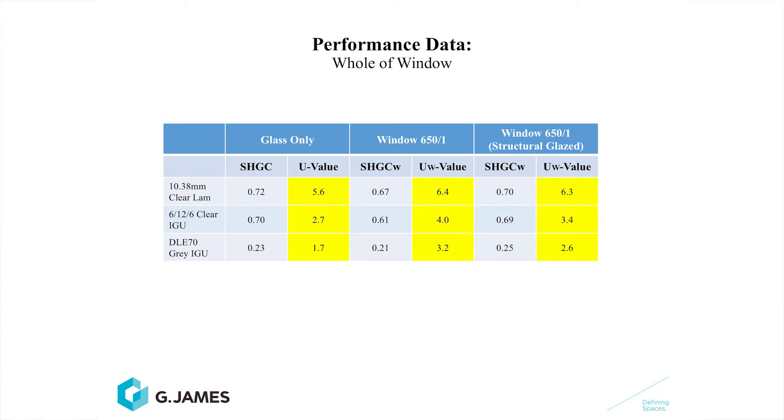In this slide, we compare the thermal performance — the solar heat gain and U-value — for glass, and the same glass in various framing systems. The first one is in the 650 or 651 six-inch frame, which has a cap on the front. The other framing system is the structurally glazed frame, which has silicone on the front.